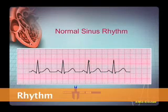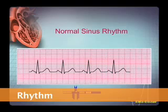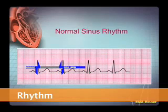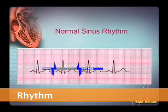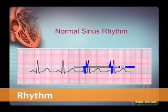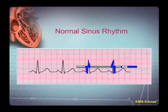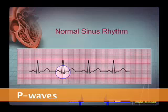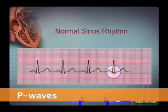Now let's look at the rhythm. Is it regular, and how would we know? We measure the distance between R waves. It's about four and a half big boxes between R waves. Using calipers, we measure from one R wave to the next, and successive R waves appear to be about the same distance apart. Therefore, the rhythm is constant. Now let's look at the P waves. Do we have a P wave for each QRS? We see a P wave and a QRS, a P wave and a QRS, a P wave and a QRS — yes, there appears to be a P wave for every QRS and a QRS for each P wave.